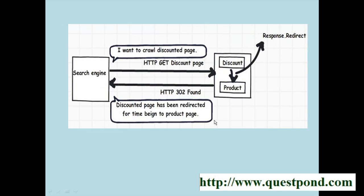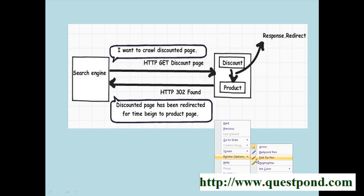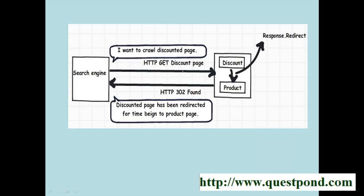The second option is also a problem — using response.redirect rather than copying the contents of the products page to the discount page. Let's say the search engine comes to the website and wants to crawl all pages and index them. It sends an HTTP GET or POST request to the discount page. The discount page has a response.redirect statement, so it sends back an HTTP 302 status to the search engine.